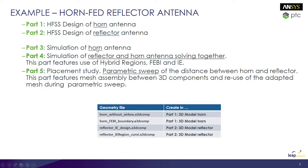In part 3 we simulate the horn antenna and we find that its directivity is not quite sufficient for our application. To solve this problem we bring in a reflector and simulate the reflector and horn antenna together. Because we have a fully parameterized model, we'll then perform a placement study to see how the distance between the horn and reflector can be changed to improve performance of our design.